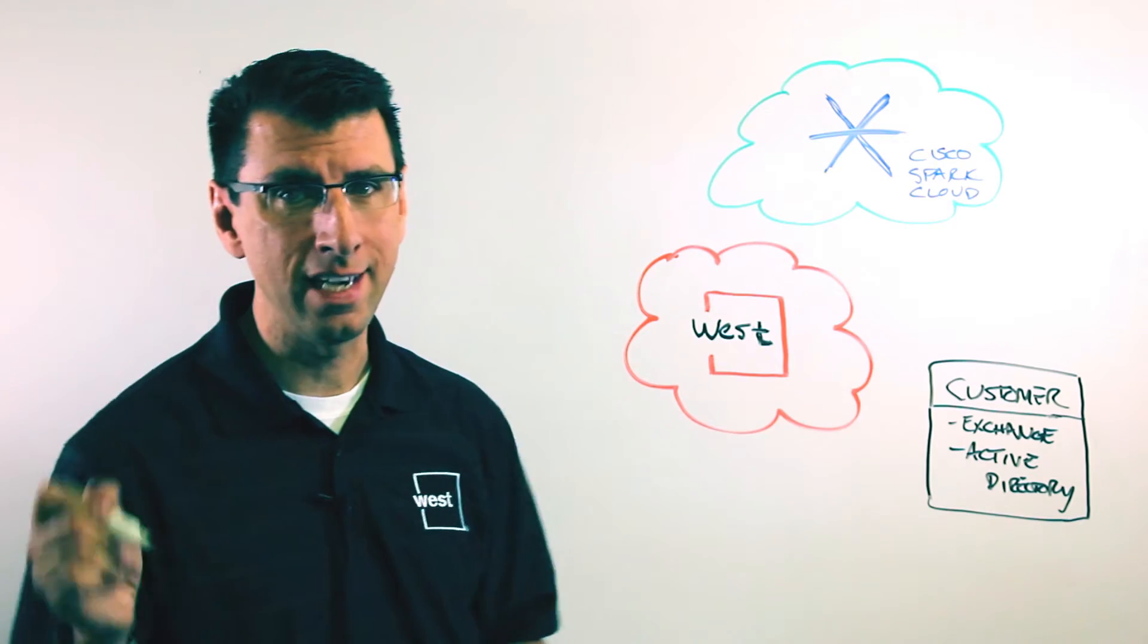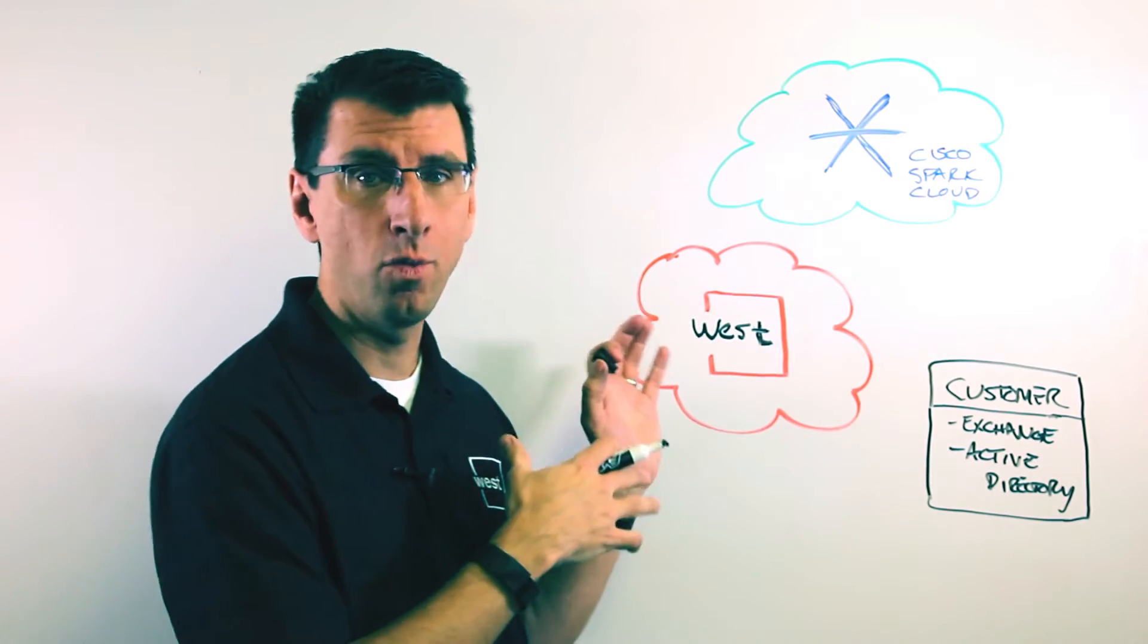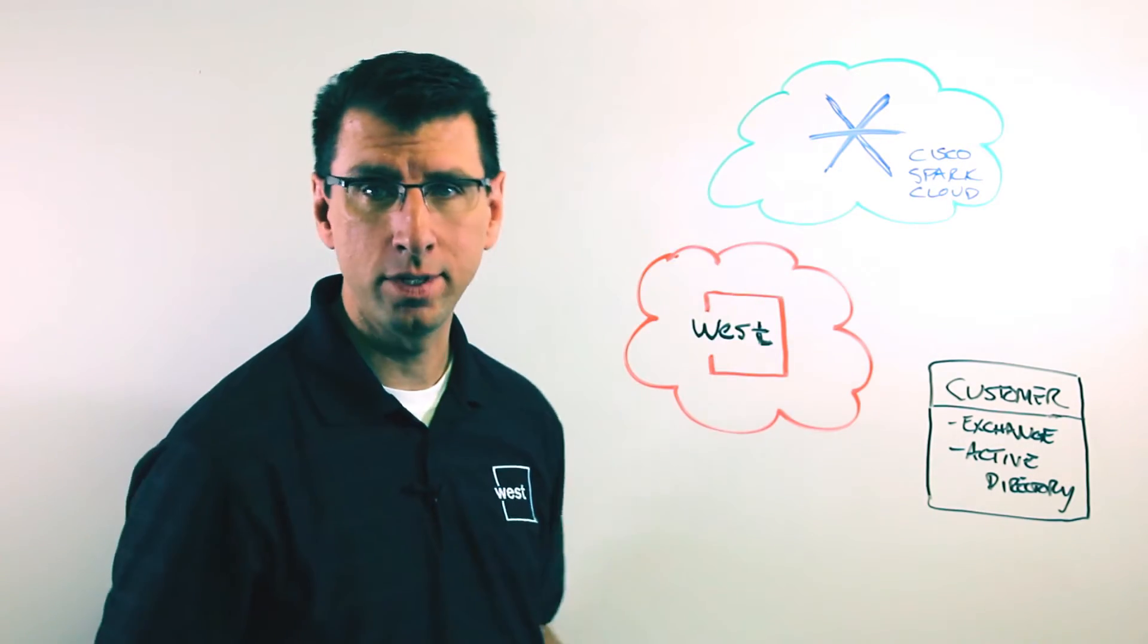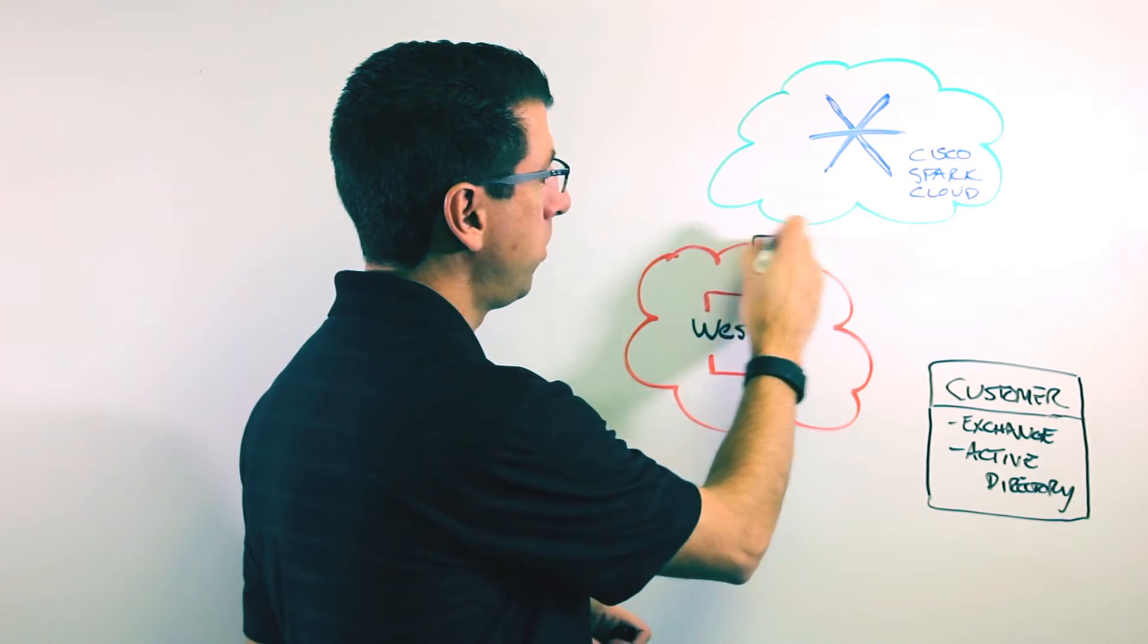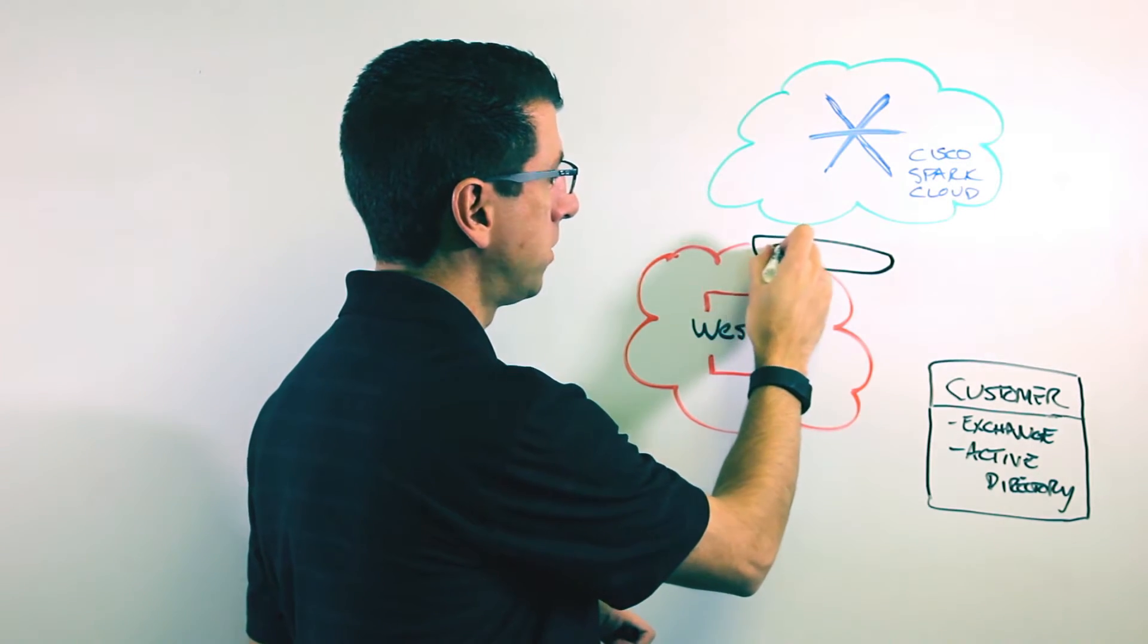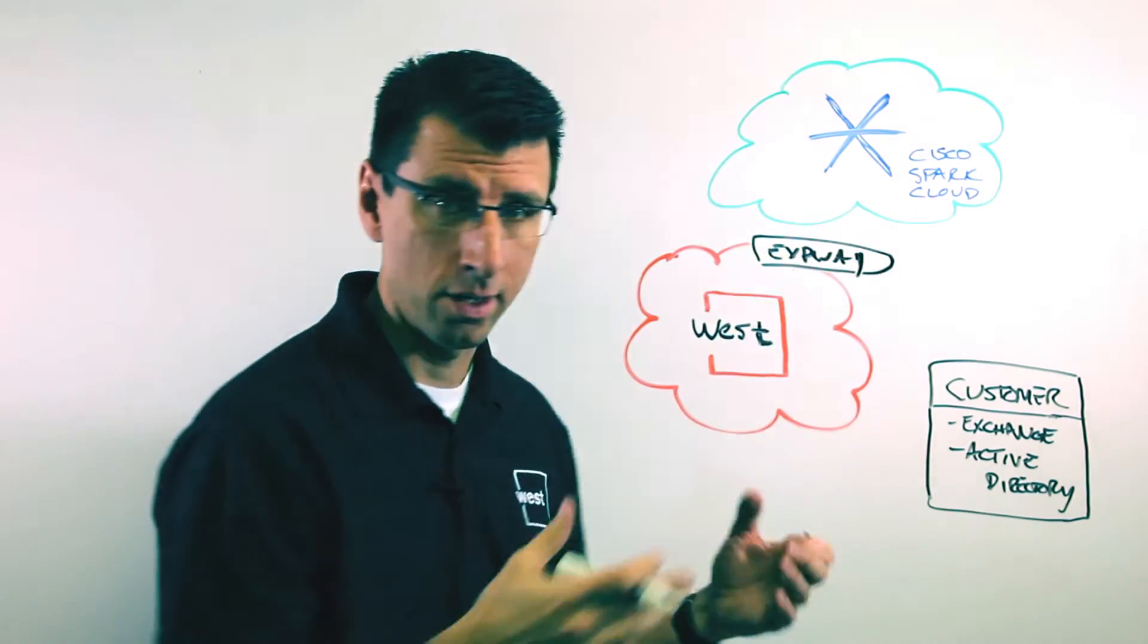Now the way this works is there's a key piece of technology that joins together the West Cloud, the Customer Premises, and what's in the Spark Cloud, and that's something called Expressway. So we have this technology here called Expressway which really is from Cisco.